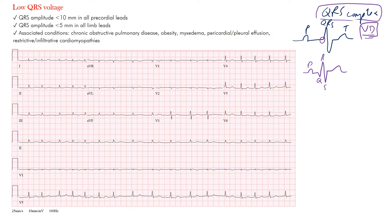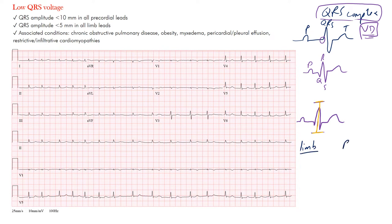For low QRS voltage, remember voltage is up and down. If you imagine your QRS complex, we're looking at the height or the amplitude from top to bottom. There are different criteria for what qualifies, and it's different in both the limb leads and the precordial leads.